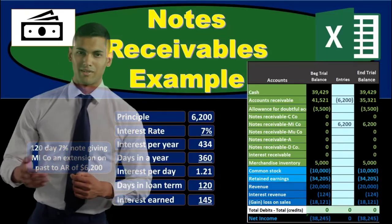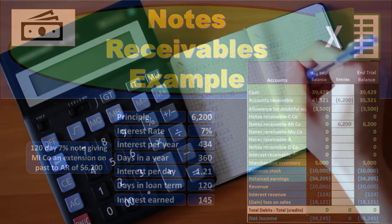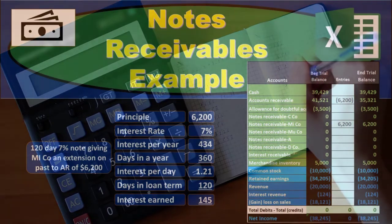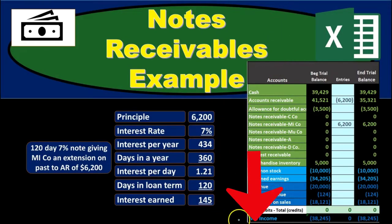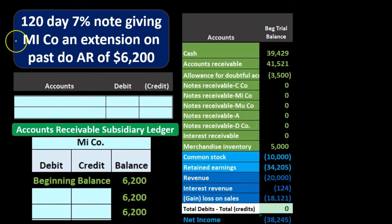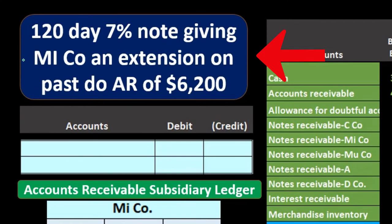In this presentation we will discuss notes receivable, giving some examples of journal entries related to notes receivable and a trial balance so we can see the effect and impact on the accounts, as well as the effect on net income of these transactions. The first transaction is a 120-day, 7% note.